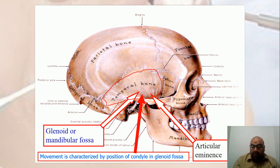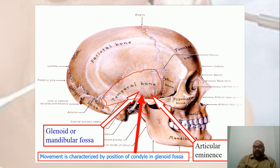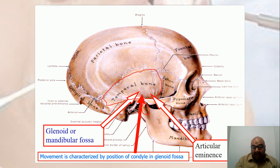There is a fossa in which the condyle articulates, known as the glenoid fossa or mandibular fossa. The anterior-most portion is the articular eminence, then we have the glenoid or mandibular fossa. The steepness or flatness of the articular eminence not only limits the anterior movements of the condylar process but also guides the movement of the condyle within the mandibular fossa.